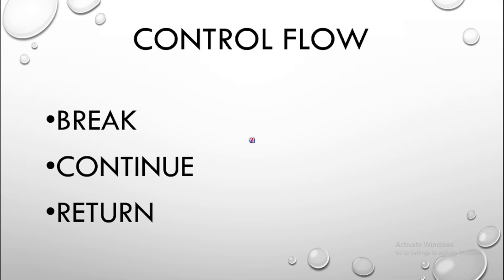There are three statements we use regularly to stop or redirect the flow: break, continue, and return. The break statement exits from a particular loop when a specific condition is met. When a break statement is encountered, that loop is exited and program flow continues after that loop block.